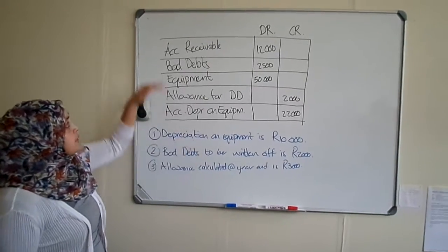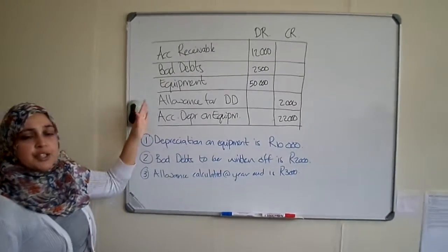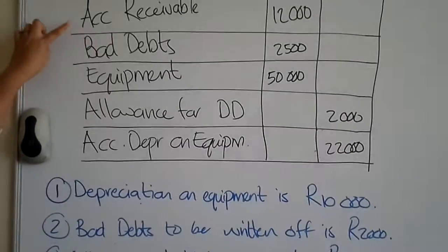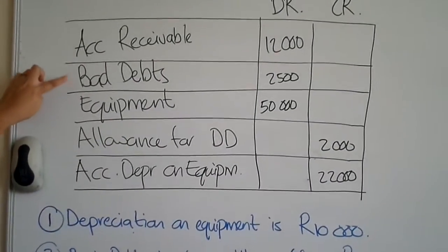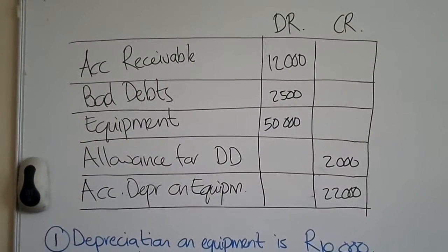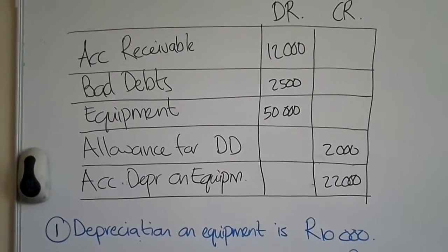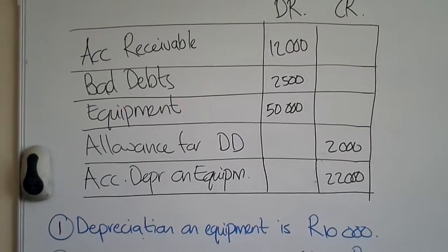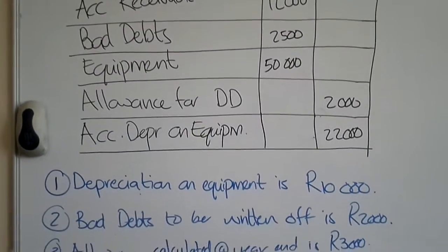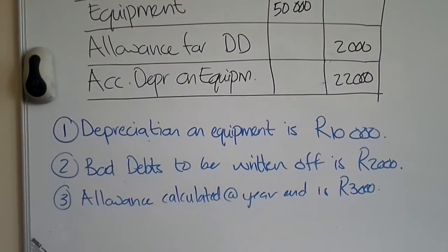So what I've done is I've drawn up an extract of the trial balance and I've just given you specific accounts. There's accounts receivable, bad debts, equipment, the allowance for doubtful debts, and accumulated depreciation on equipment. And then I've given you three transactions which is like your additional information that you would get in a question.